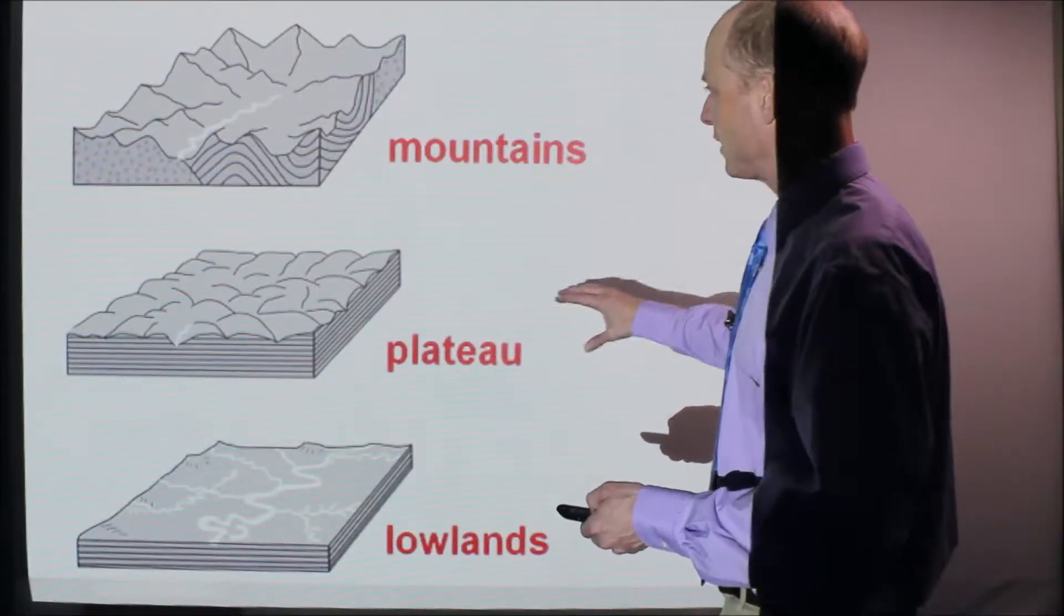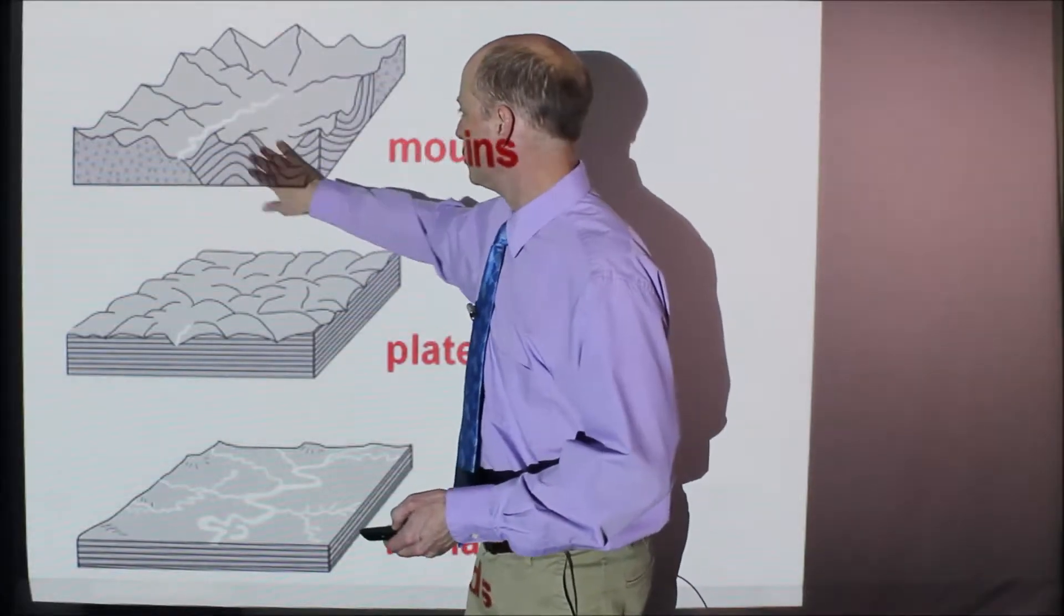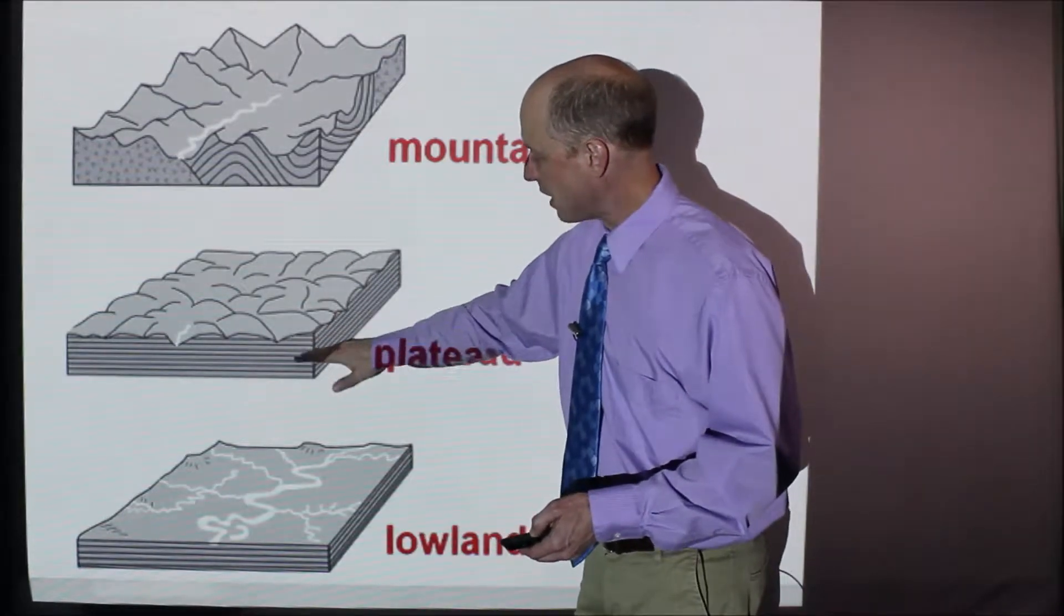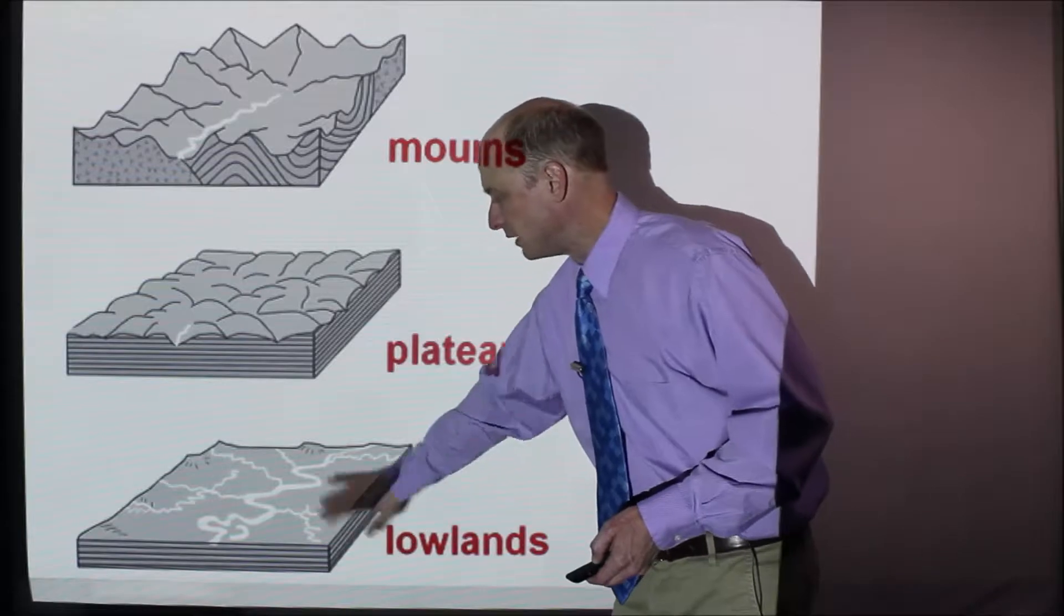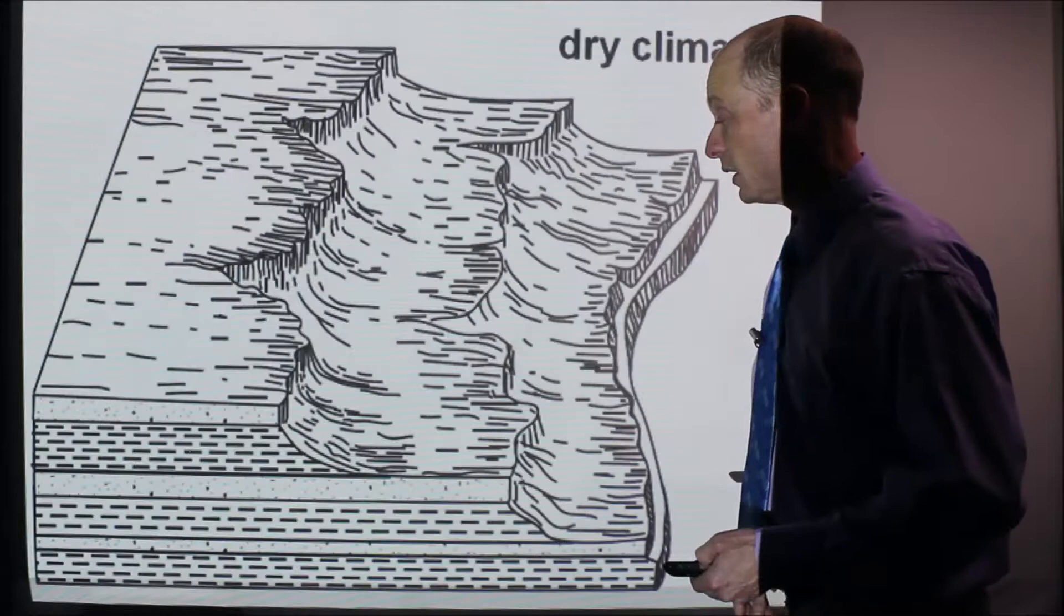So just to show them all together, this is another diagram showing mountains. Here's how you see the mountain shape, distorted rock layers here. Plateau, kind of higher elevation. You see some erosion here, but flat rock layers. And lowlands, they're just lower and really generally pretty flat. So that's one of the key differences between them.